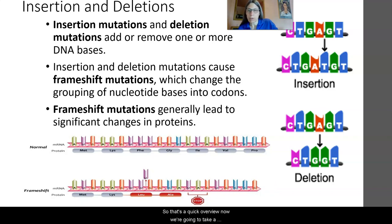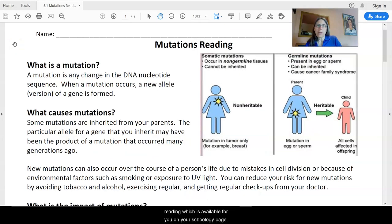So that's a quick overview. Now we're going to take a look at the reading that is available for you. Here is the reading which is available for you on your Schoology page, which goes over the way that mutations happen and the impacts that these mutations might have. So again, mutation is any change in the DNA nucleotide sequence. And when mutation occurs, you may have a new allele or new version of the gene.